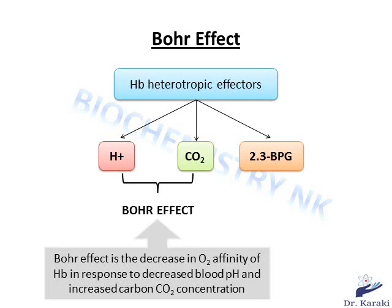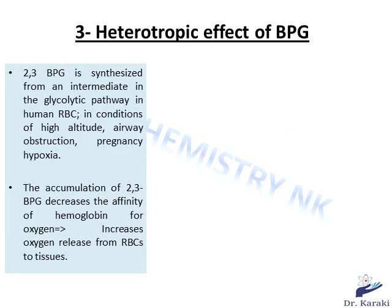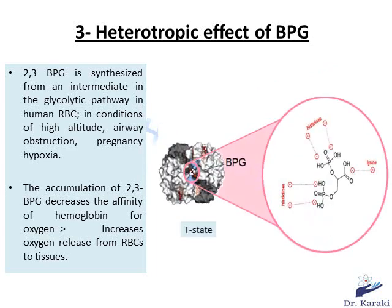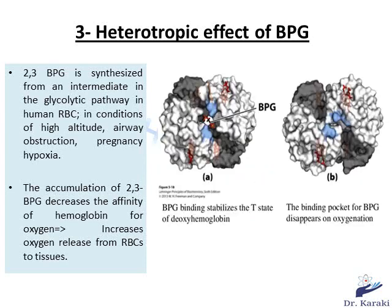Next, we will talk about the third heterotropic allosteric effector: 2,3-bisphosphoglycerate (BPG). BPG is synthesized from an intermediate in the glycolytic pathway in human red blood cells. It is a negatively charged molecule that binds to a pocket formed by the two beta-globin chains in the center of deoxyhemoglobin, stabilizing the T state. This pocket contains several positively charged amino acids like histidine and glycine that form ionic bonds with the negatively charged phosphate groups of BPG. BPG binds to the central pocket in the T state, but not to the R state, because upon oxygenation the two beta chains move closer together, leaving insufficient room for BPG.